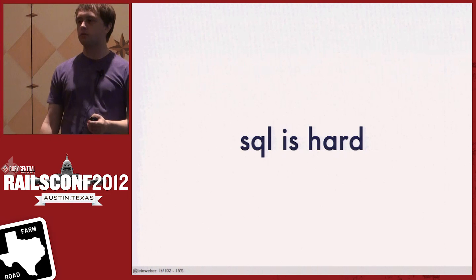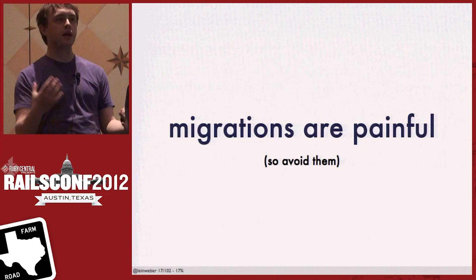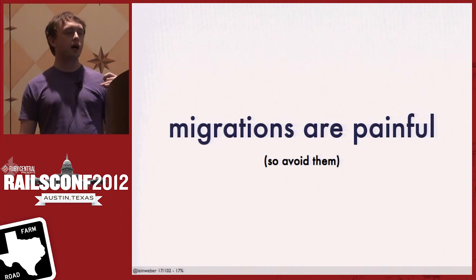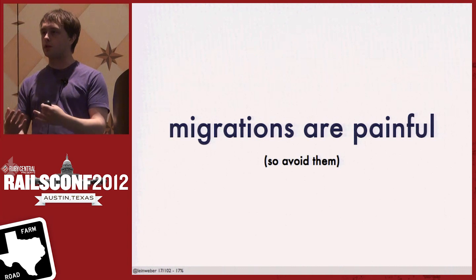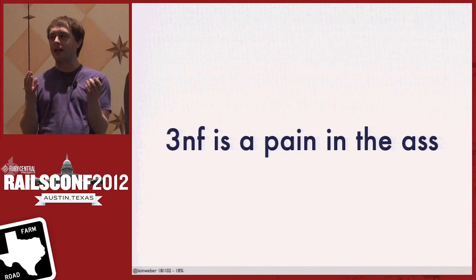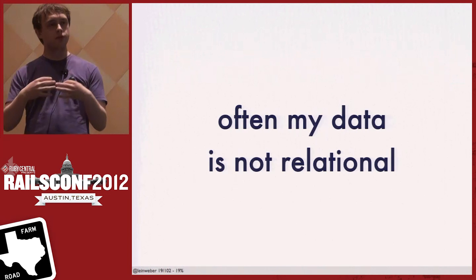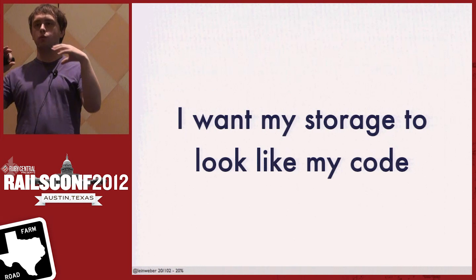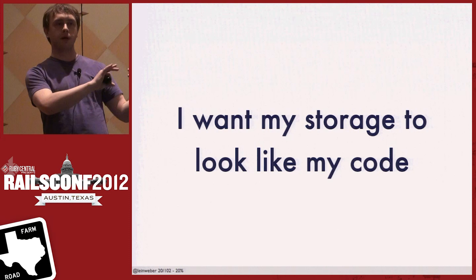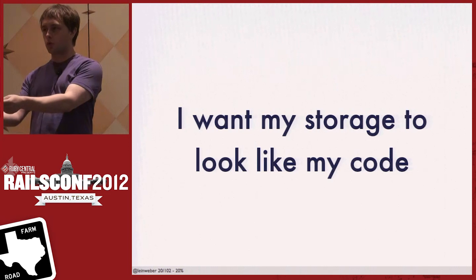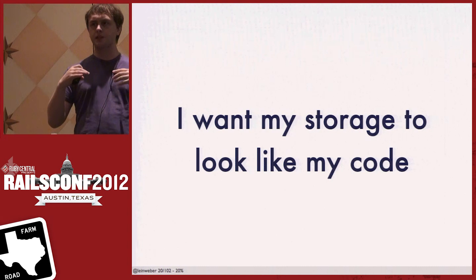SQL is kind of hard. Tables sort of suck. Having to do migrations is really painful, especially when you have a lot of data — migrations can take a long time and go wrong. People tend to avoid migrations, but that's just putting off the problem. Third normal form is a pain. My data for a web app often isn't truly relational. But the real issue is I want the way I store my data to feel like the objects I'm using in my code. When there's a big impedance mismatch between how I'm storing and using my data, that's a lot to think about.